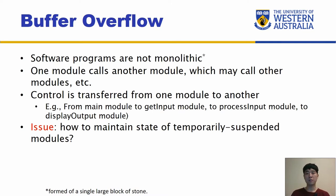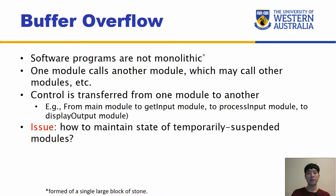One module calls another module, which may call another module, and so on — it's not monolithic. The control is transferred from one module to another. For example, from a main module, you might have a get-input module, then a process-input module, then a display-output module, and so forth. So you are jumping from one function to the other, and the control is passed on to whichever module needs to process it. The issue here is how to maintain the state of temporarily suspended modules.